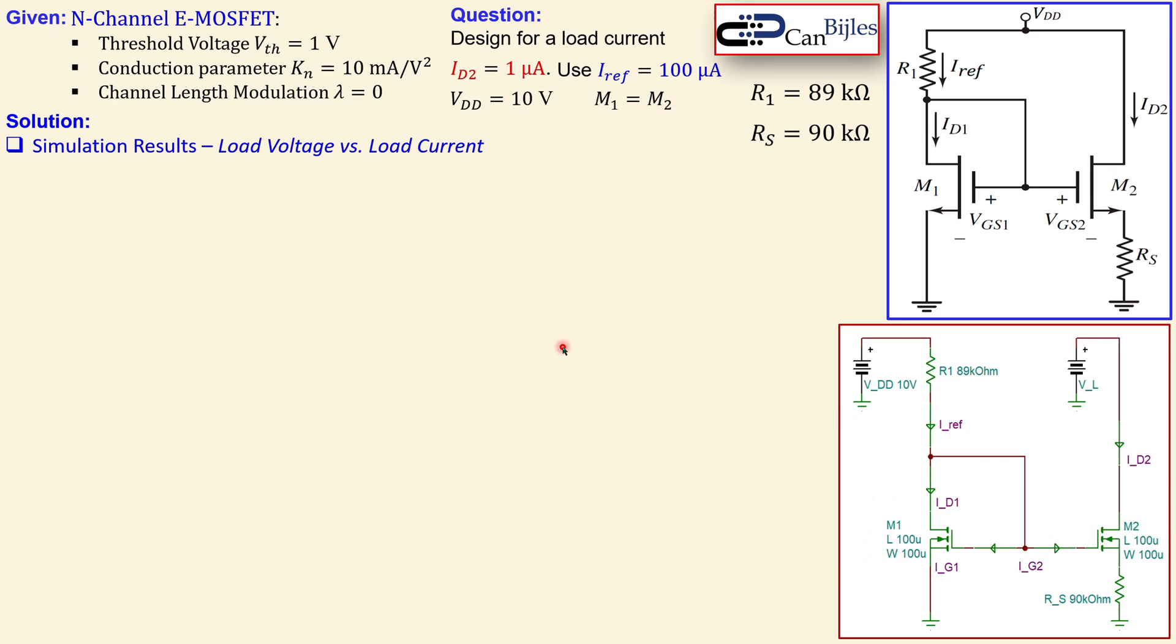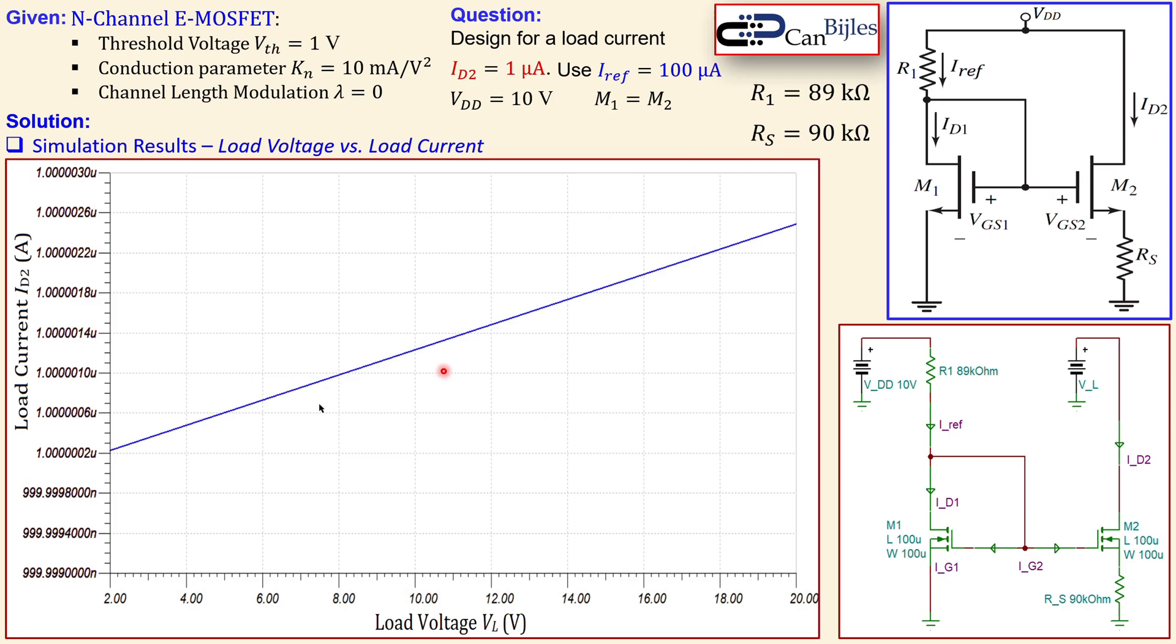Now let's see what we get. This is the plot we get. Remember, the vertical line is our load current and the horizontal line is our load voltage. So it is changing from 2 volts to 20 volts.